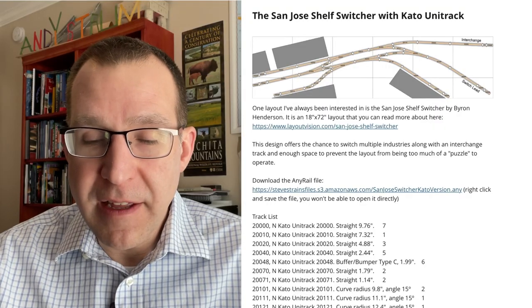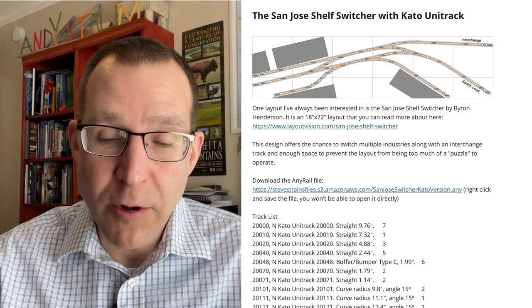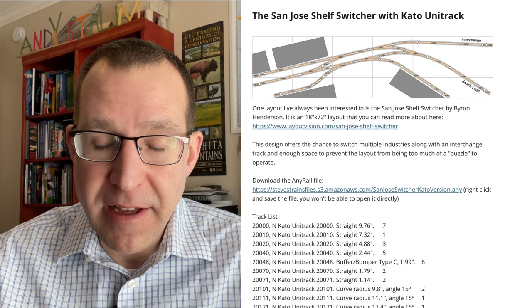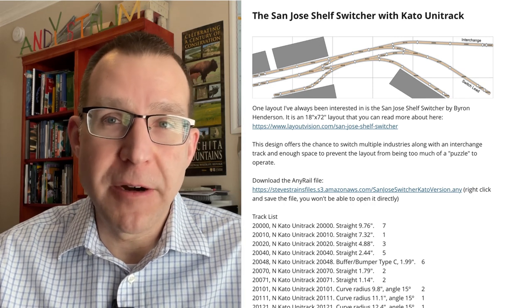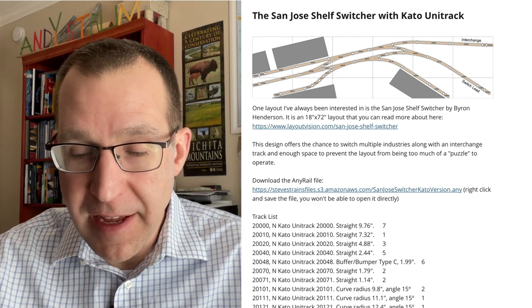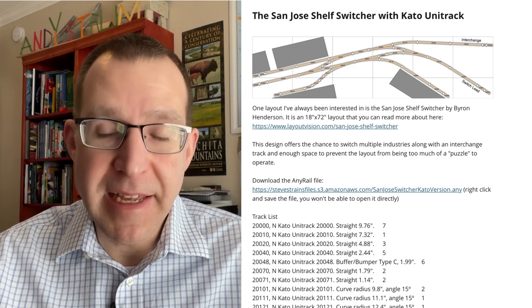So you can see here on the screen a shot from the Steve's Trains website, where I have a variety of track plans, and one is the San Jose shelf switcher, which was designed by Byron Henderson. This is my Kato Unitrack version that I have on the website, and that's the layout I've always been kind of interested in building, but I haven't really gotten around to building it.